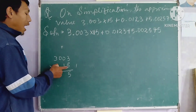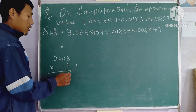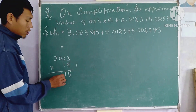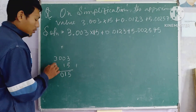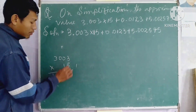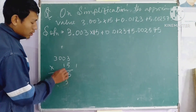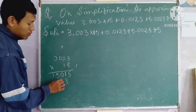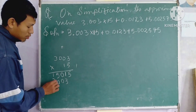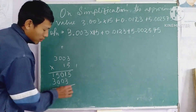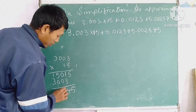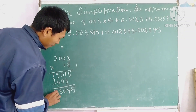50.0185 plus 1, 50.0185 plus 3. 1 into 3, 1 into 0, 0, 1 into 3, 5, 4, 0, 5.